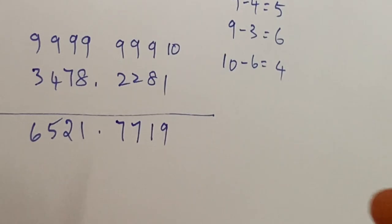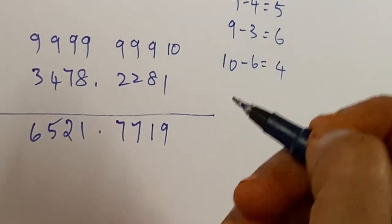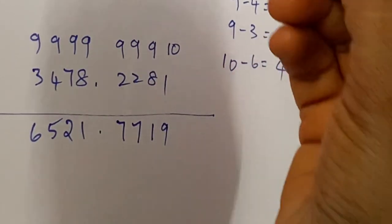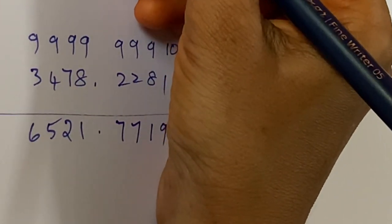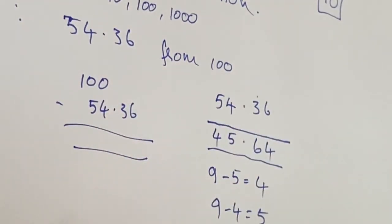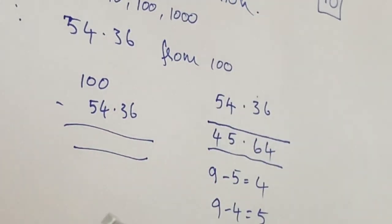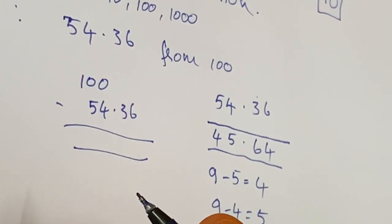You can get the answer within seconds. This is useful when we go to the market and purchase things which come in points like this. Then you can easily subtract mentally and give the change to the shop vendor. I think this is useful for housewives also. Happy studying.